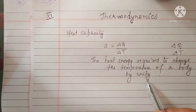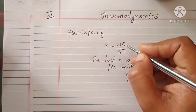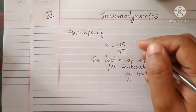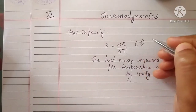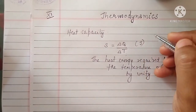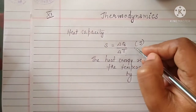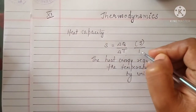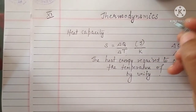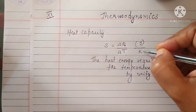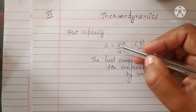What about the unit of heat capacity? Heat is a form of energy so its unit will be in joules, and the SI unit of temperature is Kelvin, so the unit of heat capacity is joule per Kelvin.